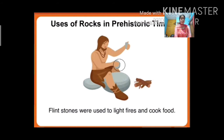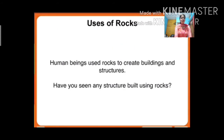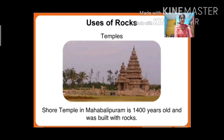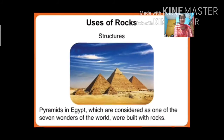Flint stones were used to light fire and cook food — since there were no matchsticks or LPG gas, early humans rubbed flint stones together to make fire and cook. Human beings also used stones to create buildings and structures. For example, the Shore Temple in Mahabalipuram is 1400 years old and was built entirely with rocks, as you can see in the picture.